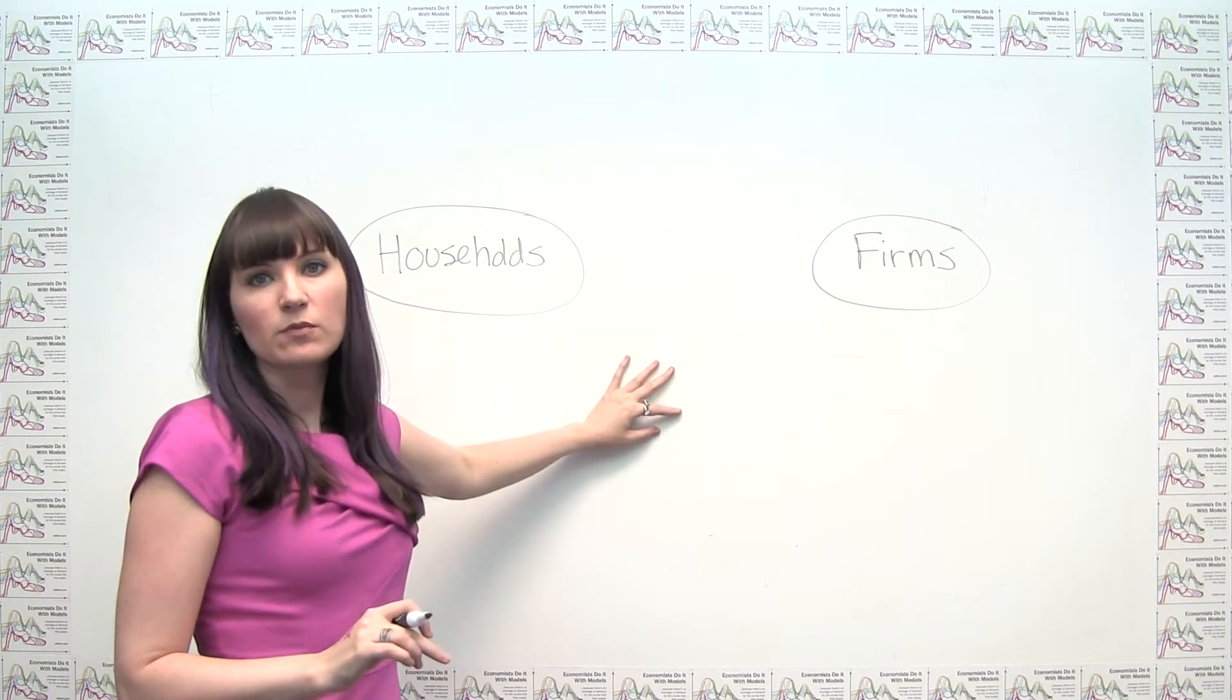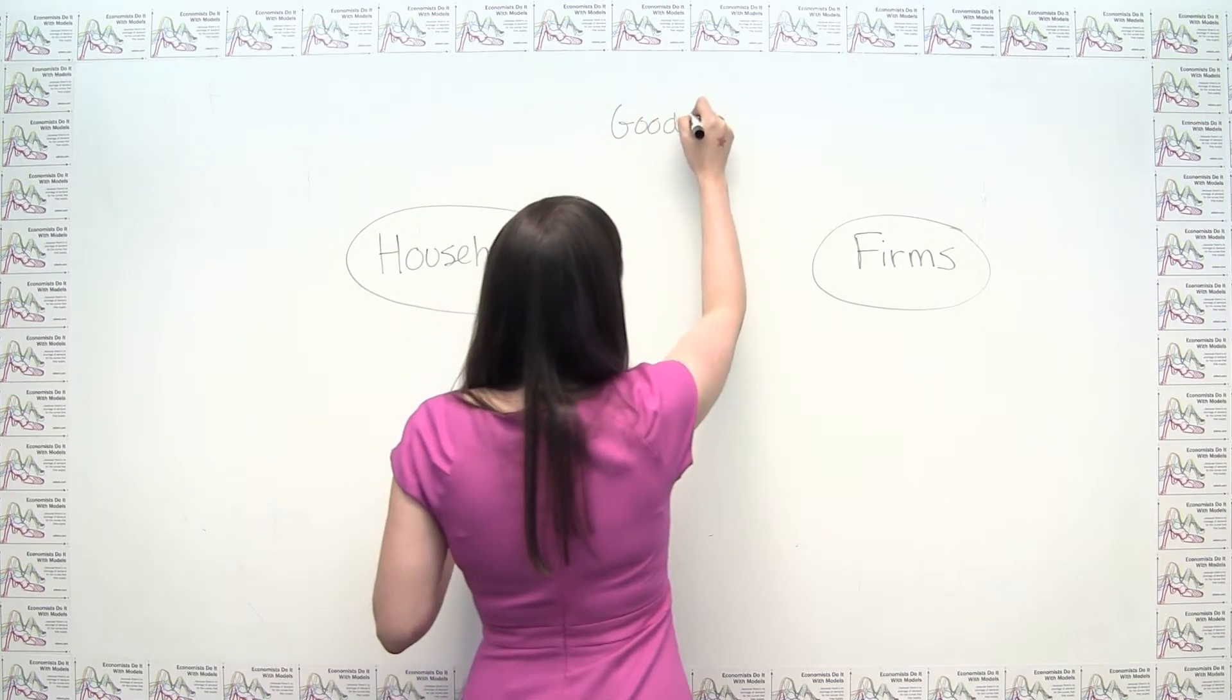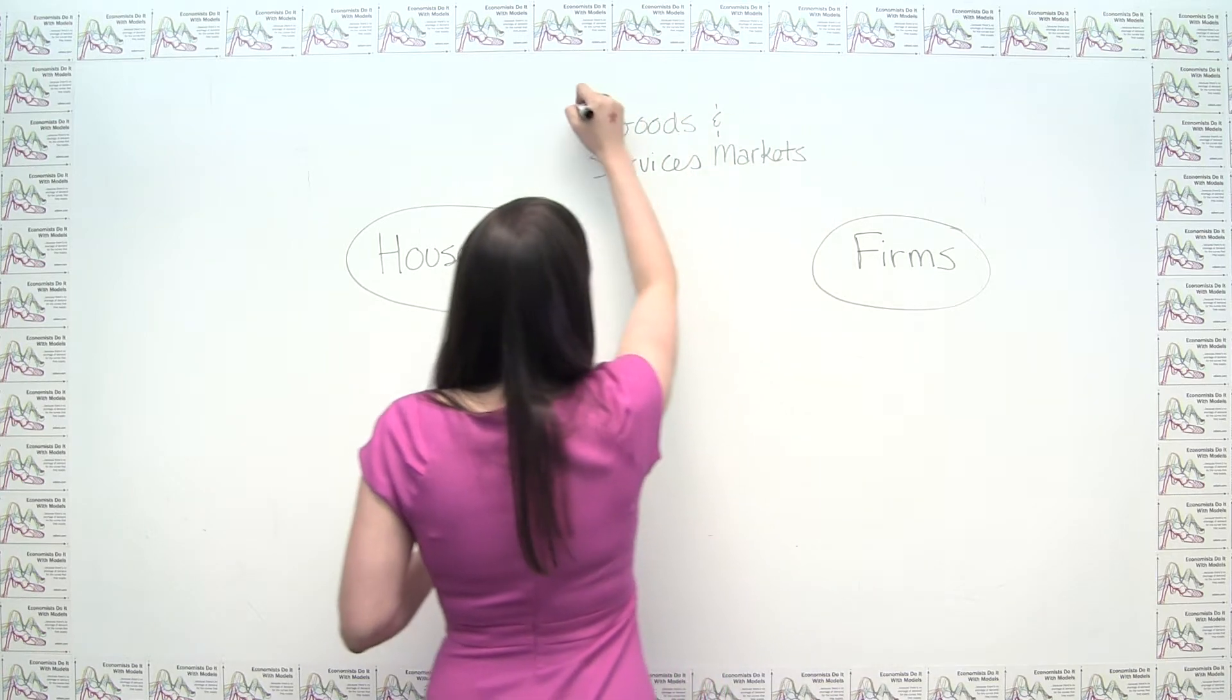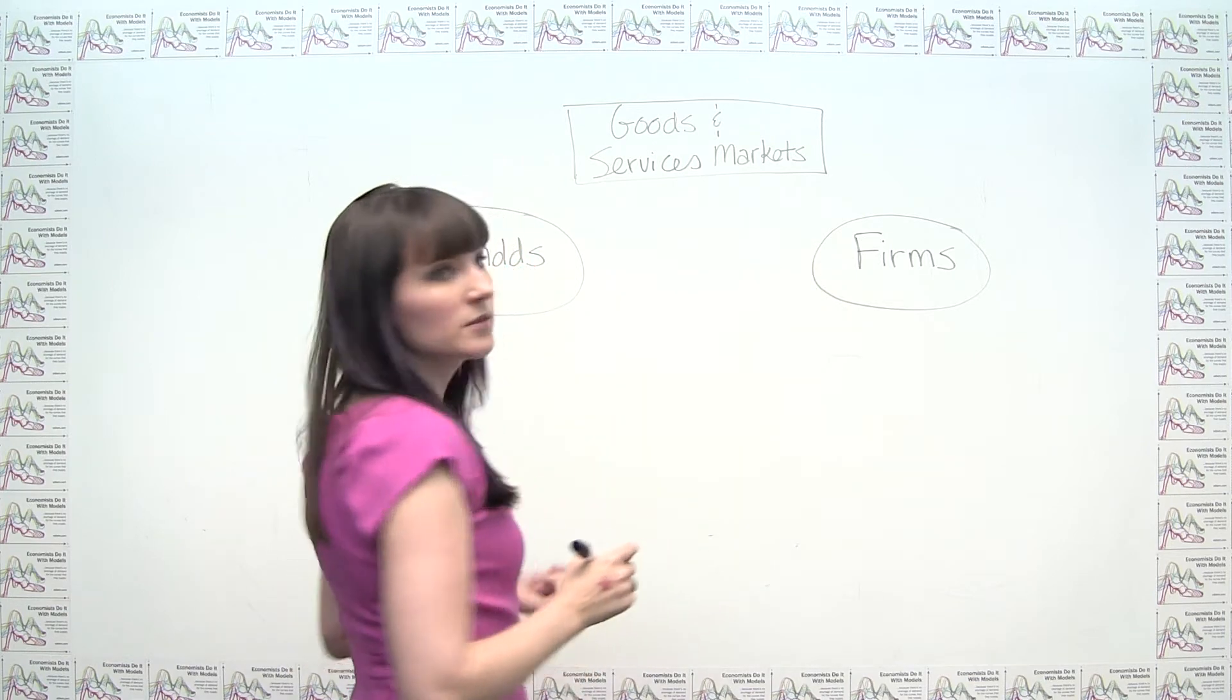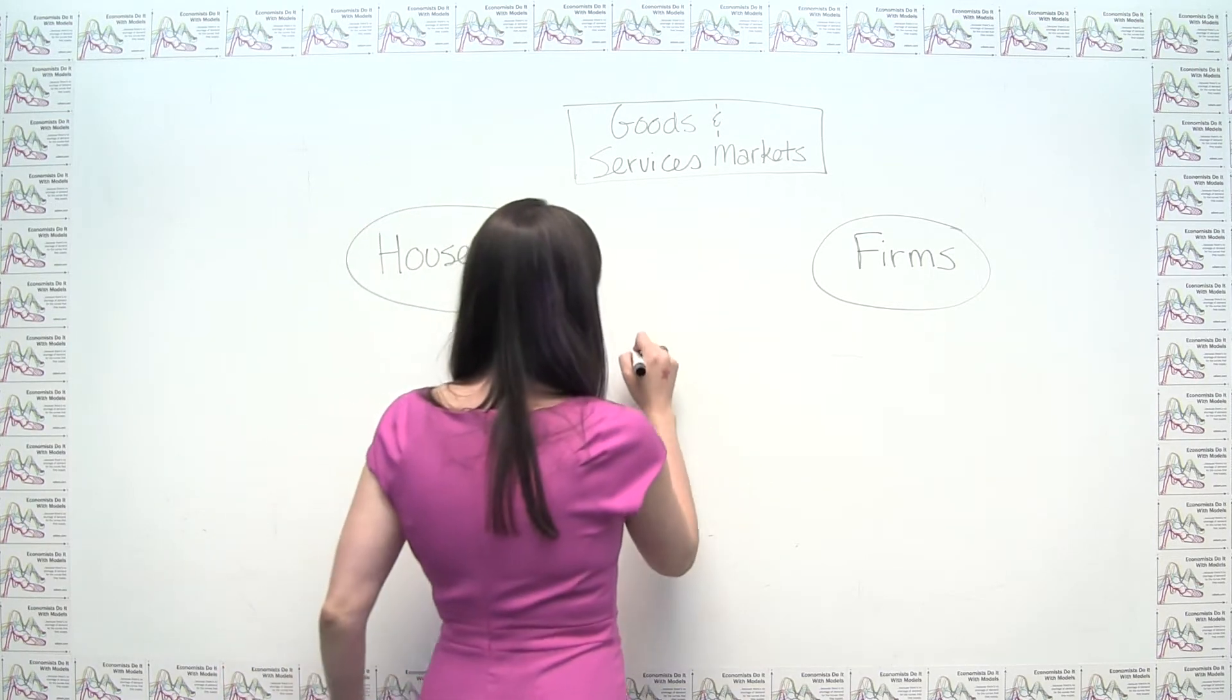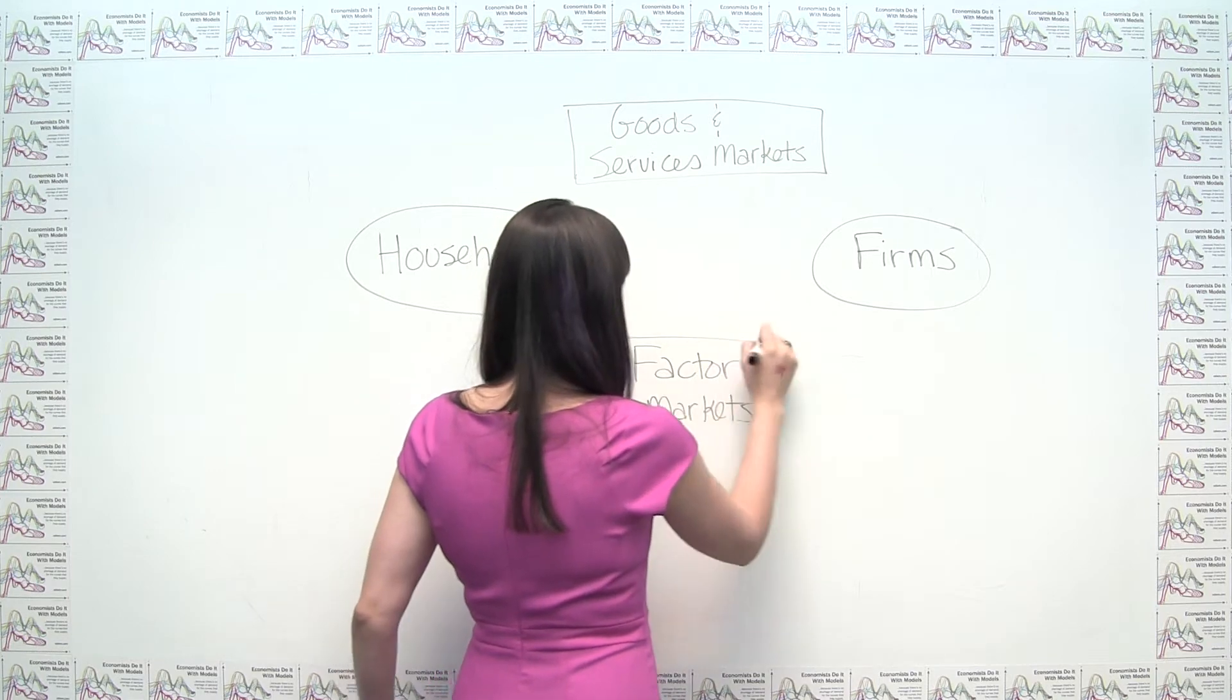The other two are our two types of markets. So we have markets for goods and services. So let's just call these goods and services markets. Maybe I'll put a square around them to remind us that these are markets and these are players in the markets. But we also have markets for the factors of production, or the inputs to production. And we call those factor markets. So we would draw factor markets down here. They would also have a square.